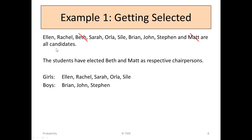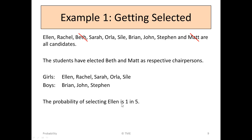So the girls that are left are Ellen, Rachel, Sarah, Orla, and Sheila. And the boys' names are Brian, John and Stephen. So the probability of selecting Ellen from the girls is 1 in 5. And the probability of selecting Stephen is 1 in 3.